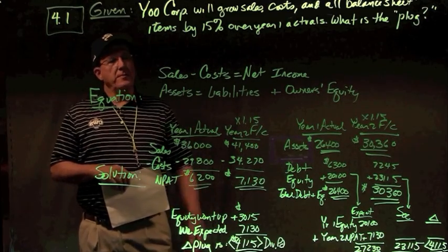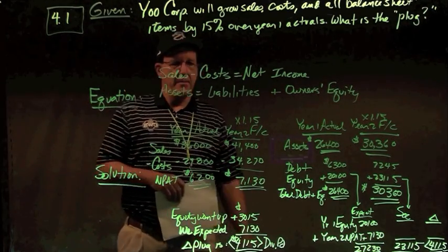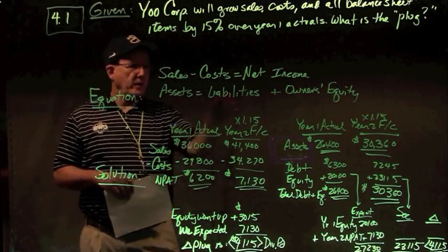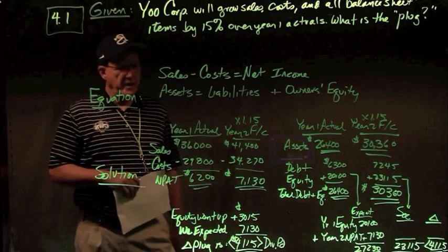Two simple equations: sales minus cost equals net income, the income statement equation, and assets equal liabilities plus owner's equity, the balance sheet equation.